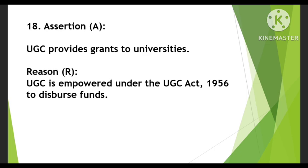Next assertion-reason question: Assertion — UGC provides grants to universities. This is correct because UGC provides grants, coordinates, determines, and maintains standards of higher education. Reason — UGC is empowered under the UGC Act 1956 to disburse funds. This is also correct. Both A and R are correct, and R is the correct reason for A.